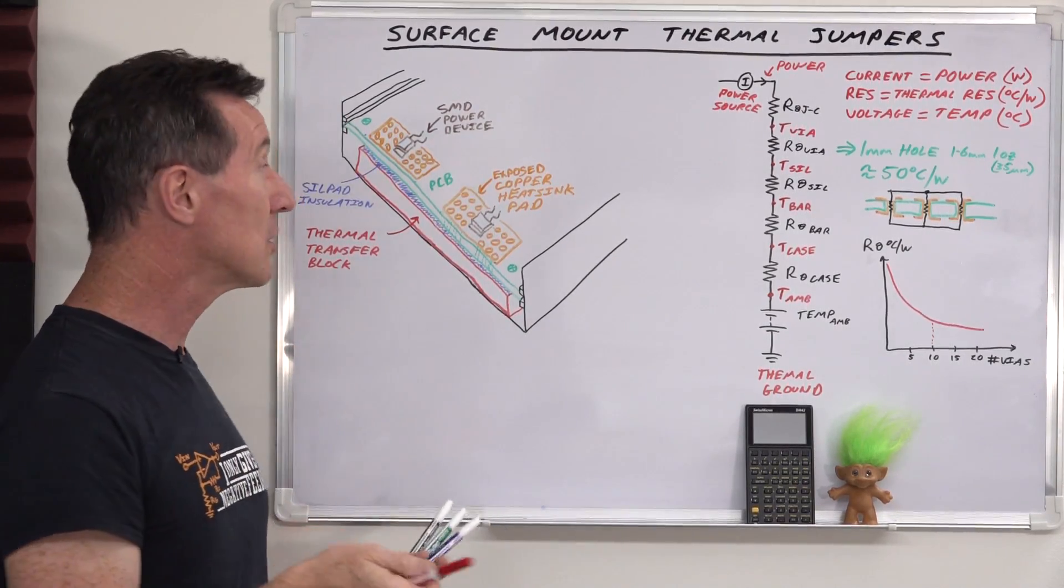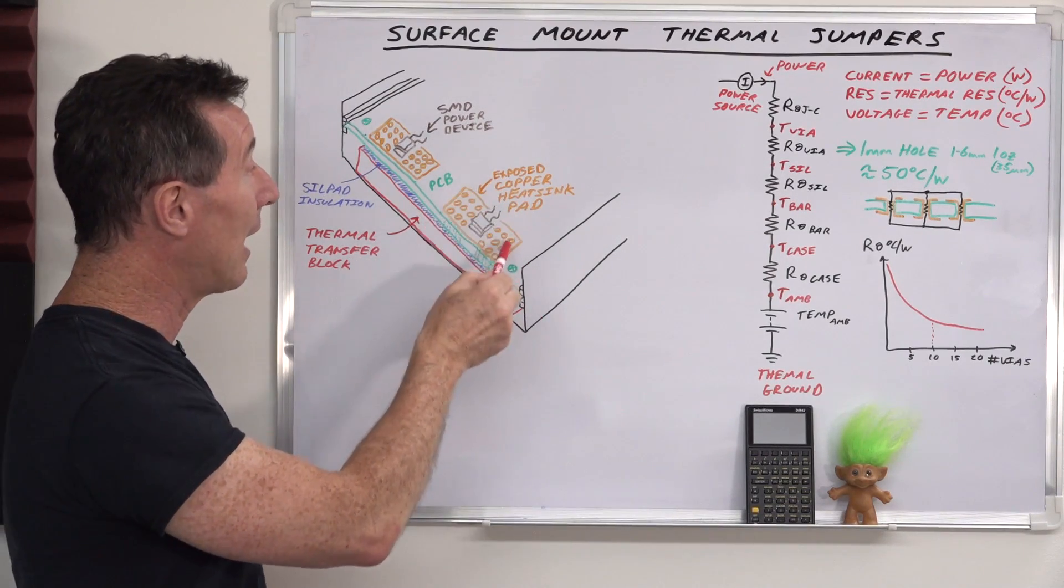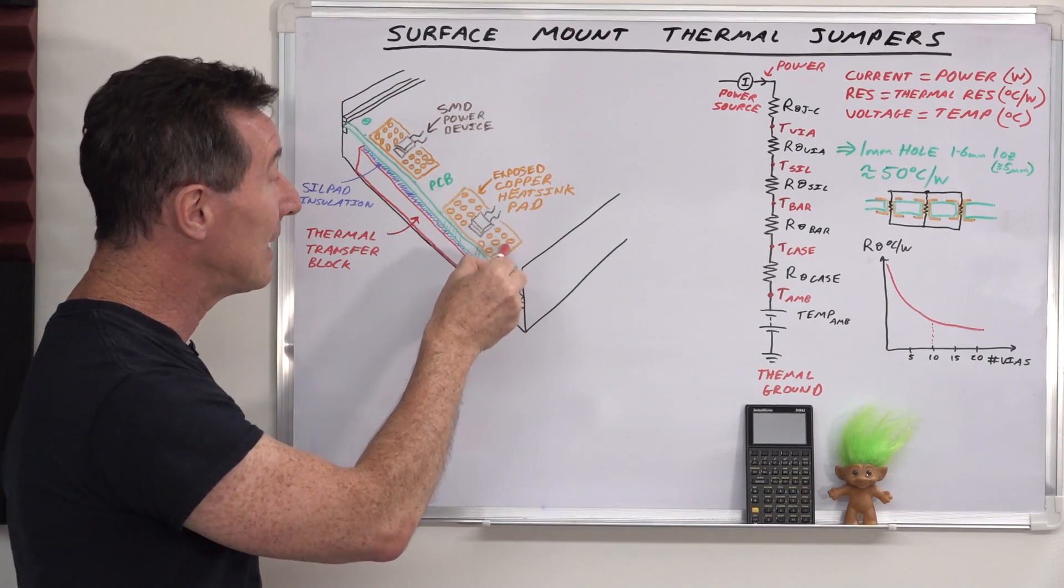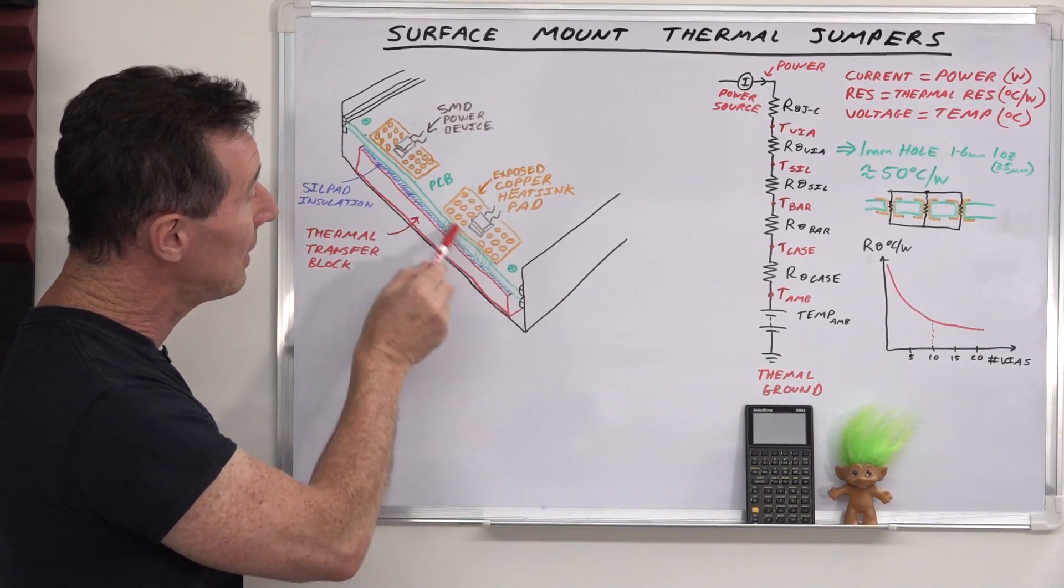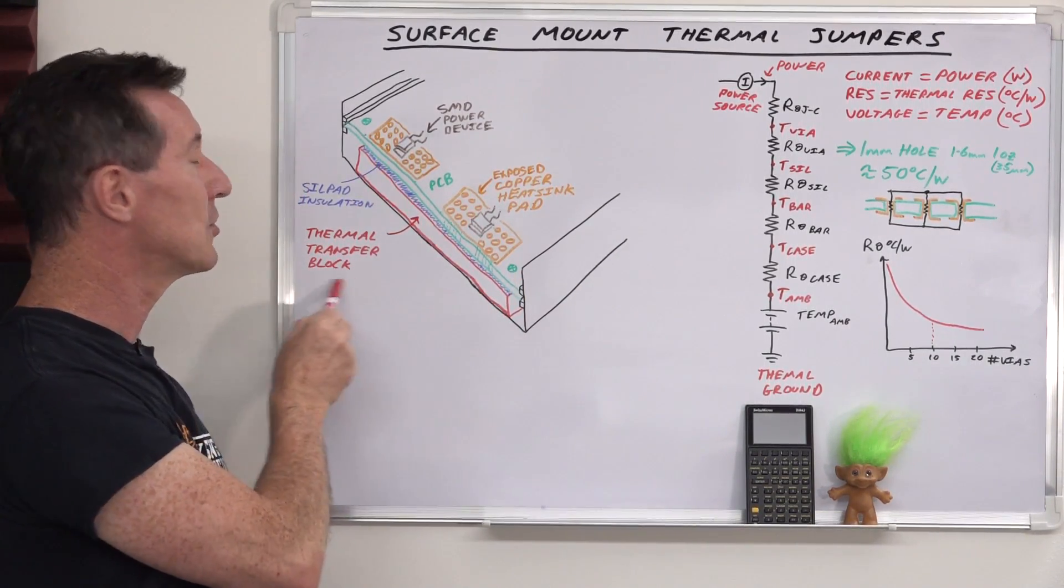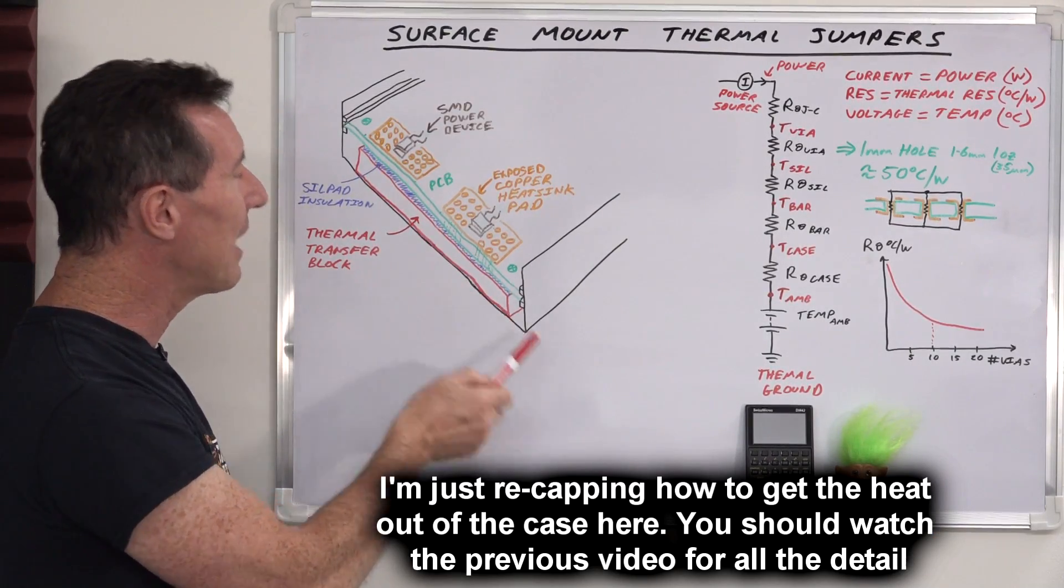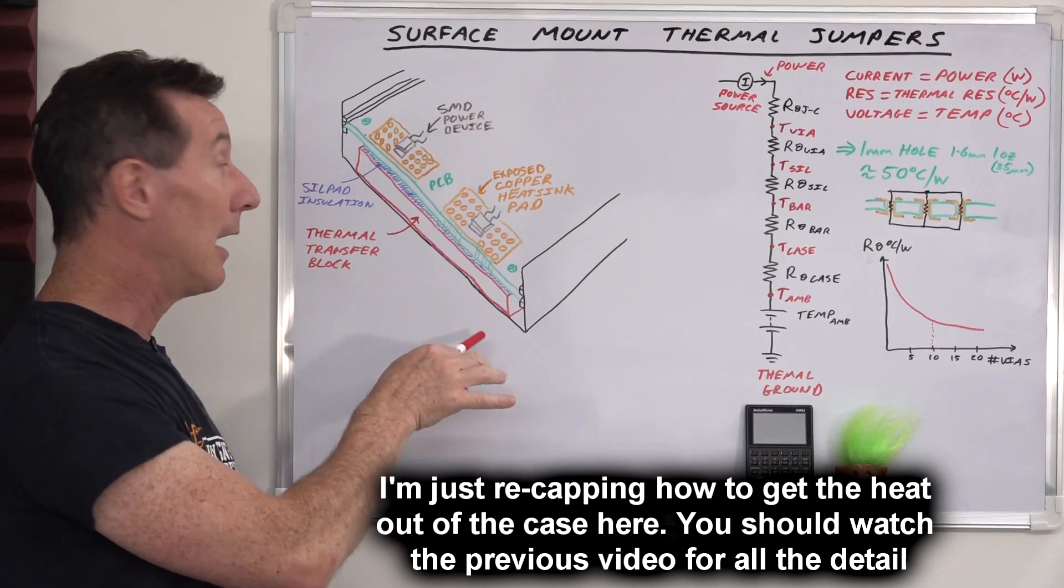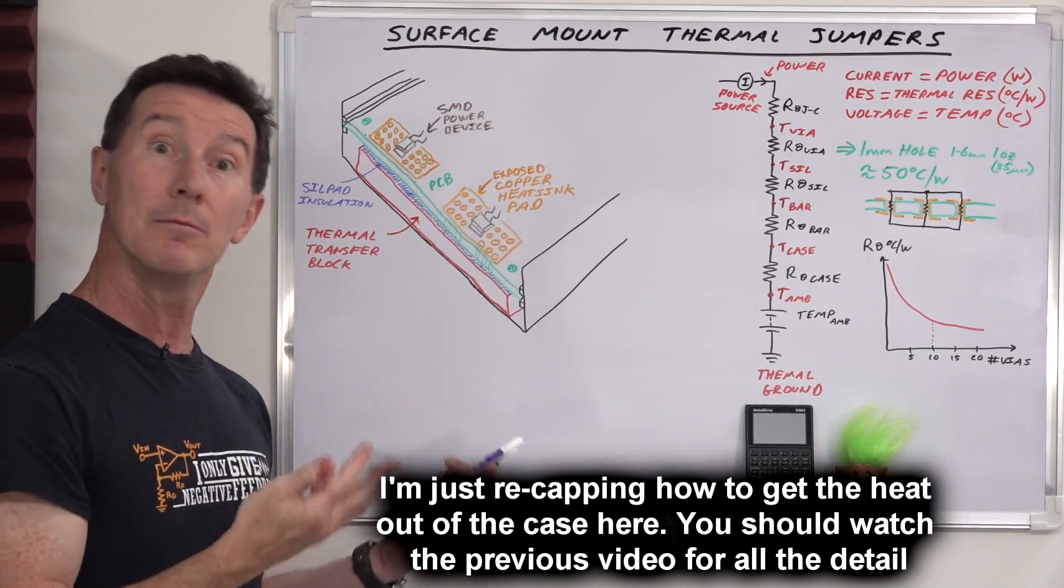But your traditional solution for this is, in orange here, is solder it onto a large copper pad like this. And then there you have thermal vias like this going through the green PCB here. And then, in this case, through to a thermal transfer block or a thermal transfer bar, which then transfers it to the case, and you can get rid of the heat from the case.